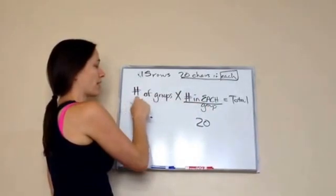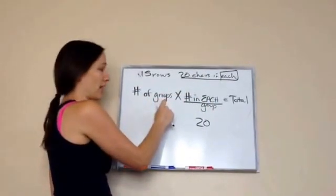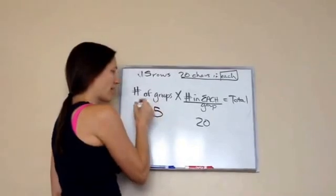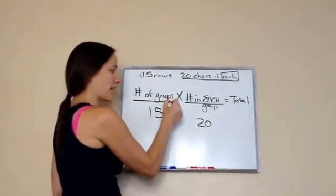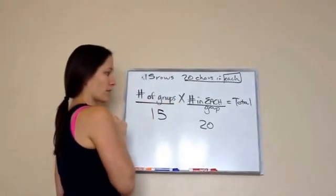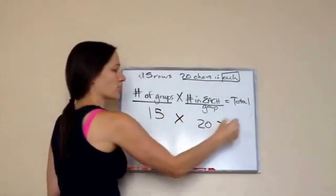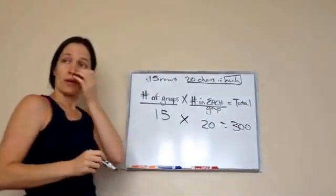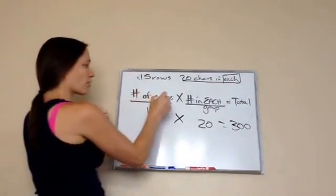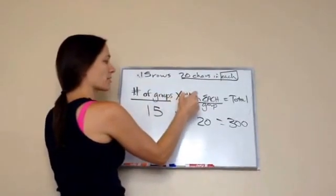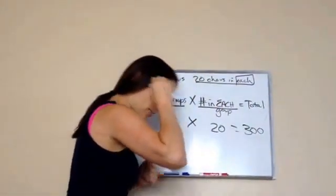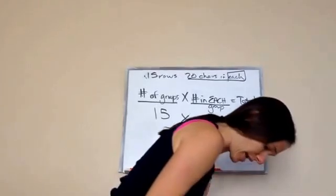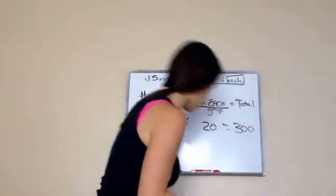So how many rows do I have? 15. So you see how I filled that in? 15 times 20 equals the total, which is 300. So this number of groups times the number in each group is going to be important for us to remember that kind of equation pattern.